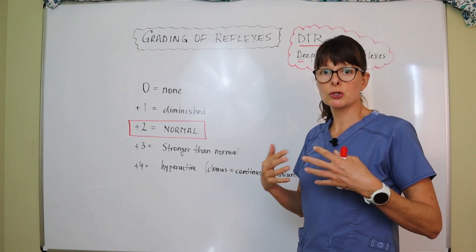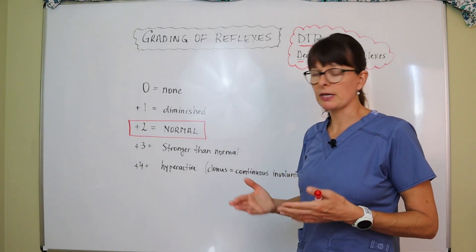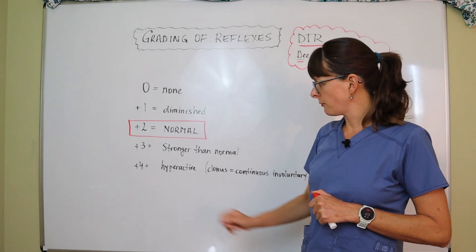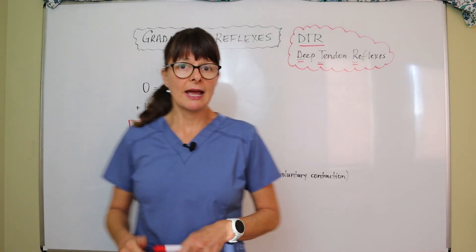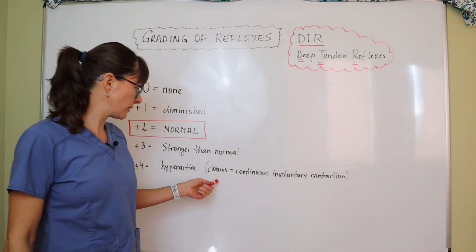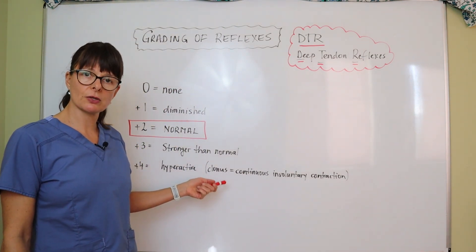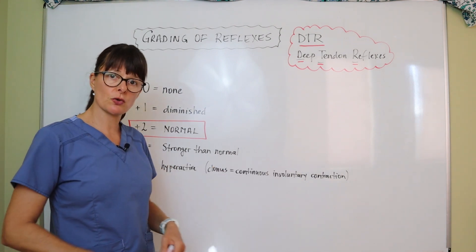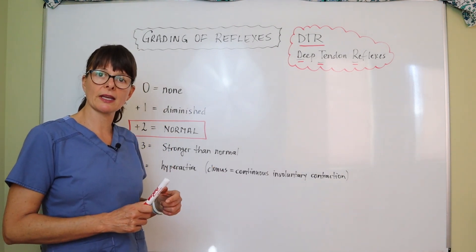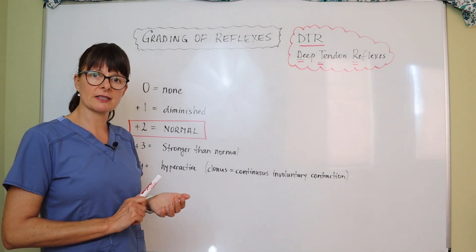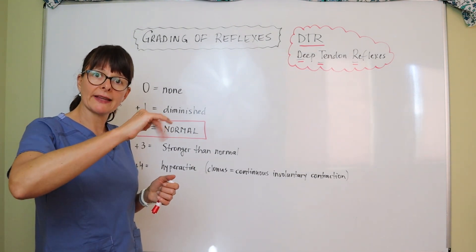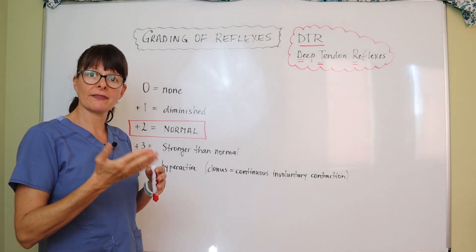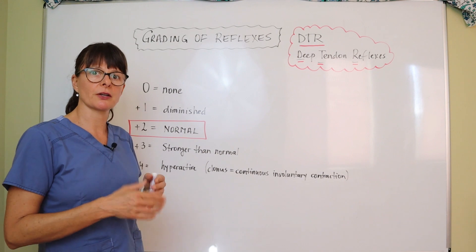If the response is more or stronger than normal, it would be a plus three. If it's a plus four, it's considered hyperactive — also termed clonus. Muscular clonus means there is continuous involuntary contraction just after briefly striking the reflex site. That muscle is just continuously firing; the reflex is hyperactive and that neuromuscular junction simply cannot release.